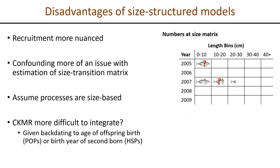Major disadvantages of size-structured models: recruitment is more nuanced and requires tailoring to the species' life history. Confounding has been noted as more of an issue in estimating the size transition matrix and its associated parameters — the processes of natural mortality, growth, and selectivity are more confounded when cohorts are less clear. Size-structured models assume size-based processes, so strong age-based processes such as ontogenetic movement won't be approximated as well. Finally, close-kin mark-recapture analysis may be more difficult to integrate, as it is fundamentally age-based inference back-dating to birth year for parent-offspring and half-sibling pairs.